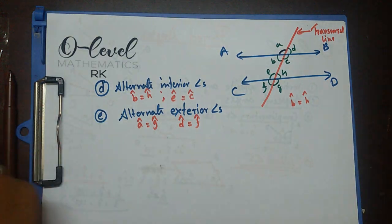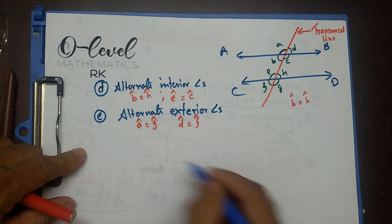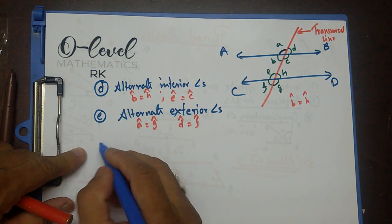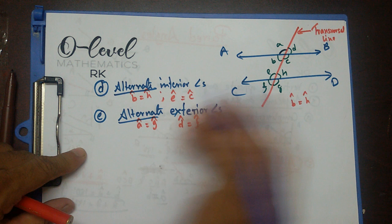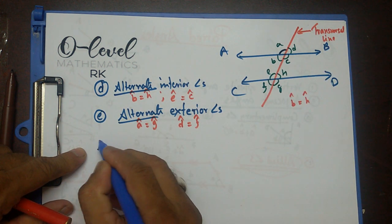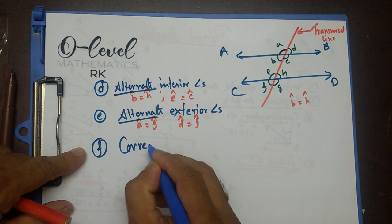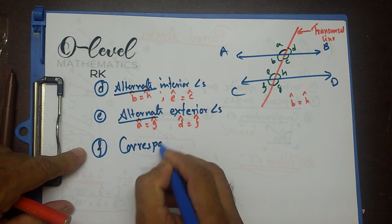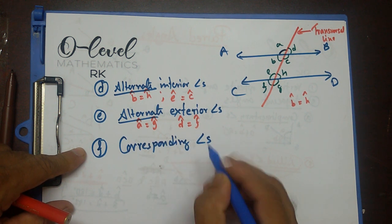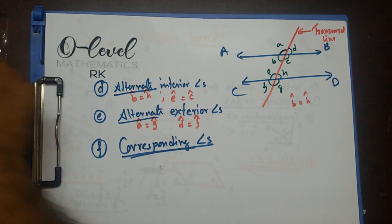Corresponding angles — I just showed a little while ago — means similarly placed. The difference is: alternate angles means opposite sides of the transversal line, whereas corresponding angles means on the same side of the transversal line, similarly placed.